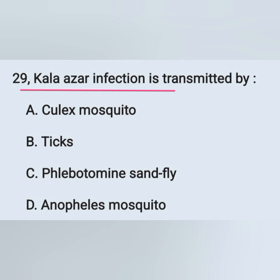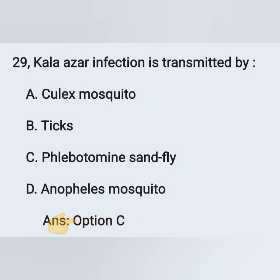Question 29: Kala-azar infection is transmitted by — options: option A, Aedes mosquito; option B, ticks; option C, Phlebotomus and sandfly; option D, Anopheles mosquito. The transmission of Kala-azar infection is by Phlebotomus and sandfly. Option C is the correct answer.